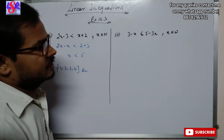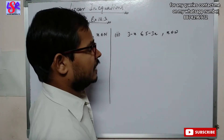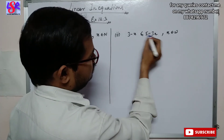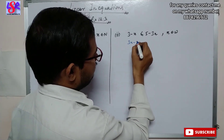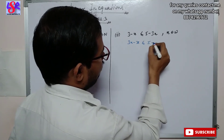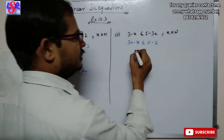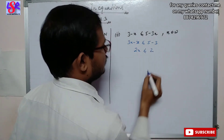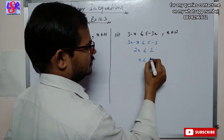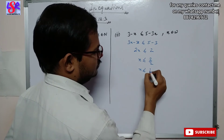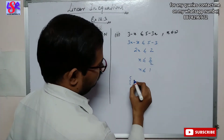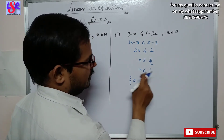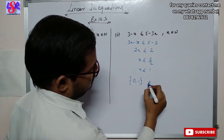Now let's move to the second part. Here we have 3 minus x is less than or equal to 5 minus 3x where x is the element of whole number. Rearranging: 3x minus x is less than or equal to 5 minus 3. Now 3x minus x is 2x, less than or equal to 2. So x is less than or equal to 2 upon 2, that is x is less than or equal to 1. As x is a whole number, we take 0 as well as 1. The answer is 0 and 1.